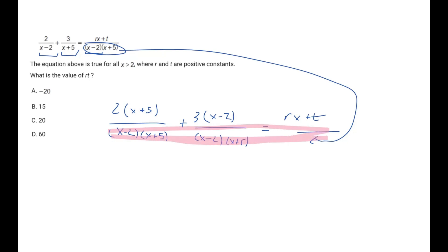All this at the bottom dies. And so now we're left with the following on top: 2 times (x+5) plus 3 times (x-2) equals rx plus t. Now we want to distribute this out. So 2 times x is 2x, and then 2 times 5 is 10, and then we add 3 times x, so 3x, and then 3 times negative 2 is negative 6, equals rx plus t.